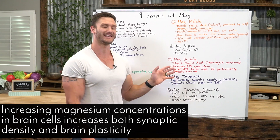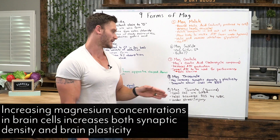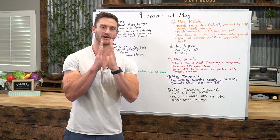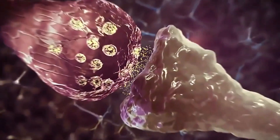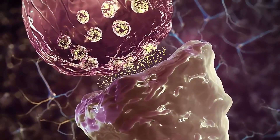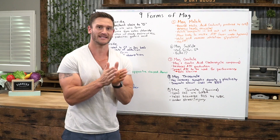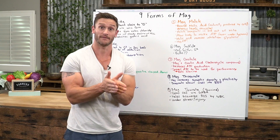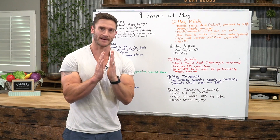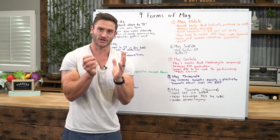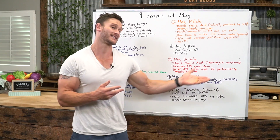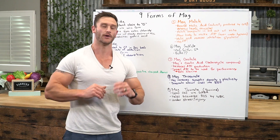Magnesium increases synaptic density. When you have two neurons communicating with each other, the synaptic cleft between the two needs to be dense for information to be able to pass through. Think of it as the density of a one-lane road versus an eight-lane superhighway. If you have more density within that synapse, then more information can cross, and you get more information at a faster rate. And then plasticity means that we can move the road.